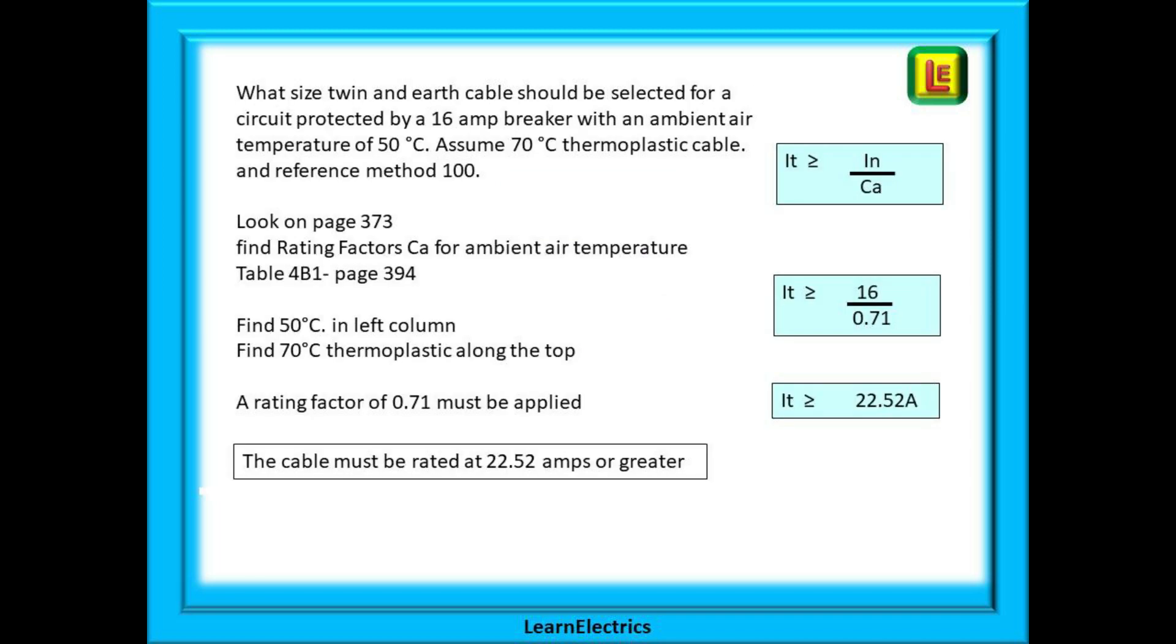If a question asked what size twin and earth cables should be selected for a circuit protected by a 16 amp breaker with an ambient air temperature of 50 degrees centigrade. Assume 70 degrees centigrade thermoplastic cable and reference method 100. We can begin by looking on page 373 and find the rating factors CA for ambient air temperatures.